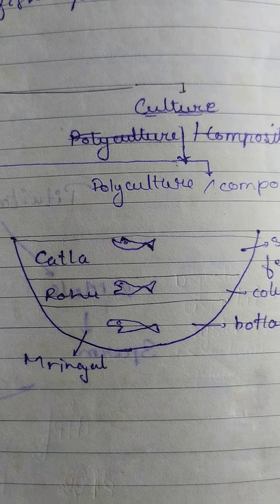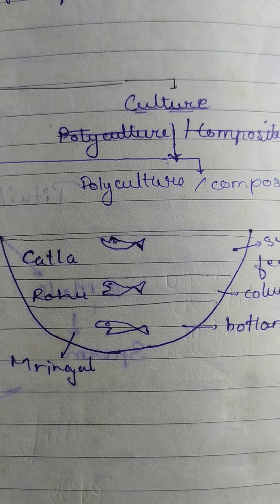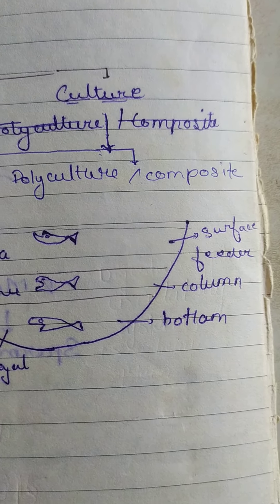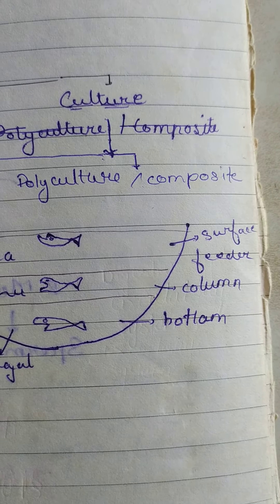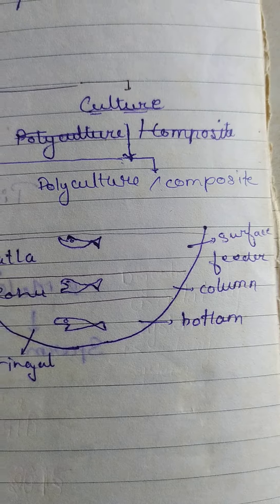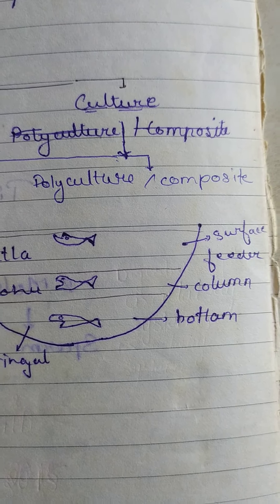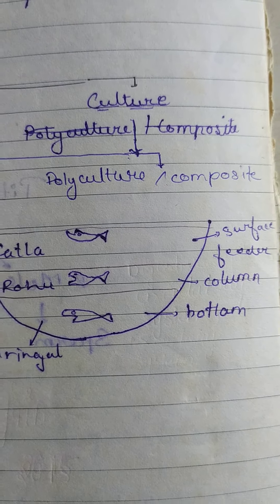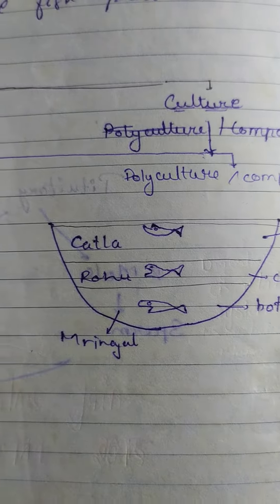Fish types include Katla, Rohu, and Mrigal. These are categorized as surface feeders, column feeders, and bottom feeders.